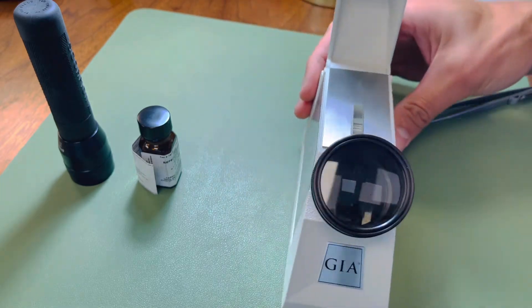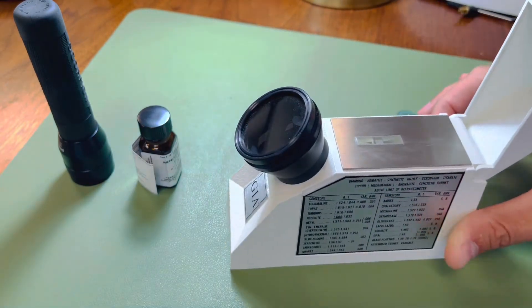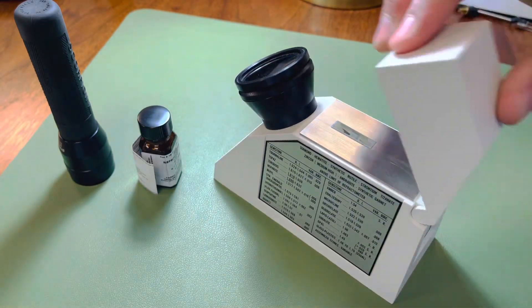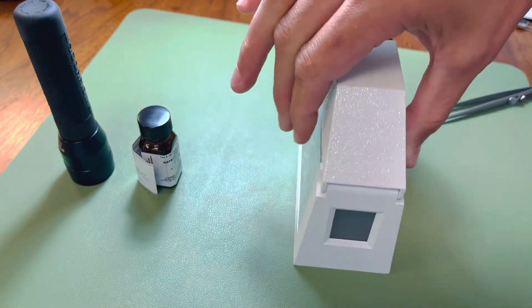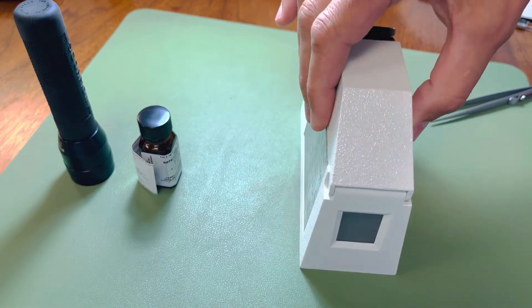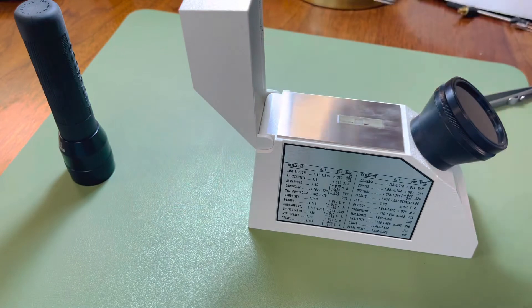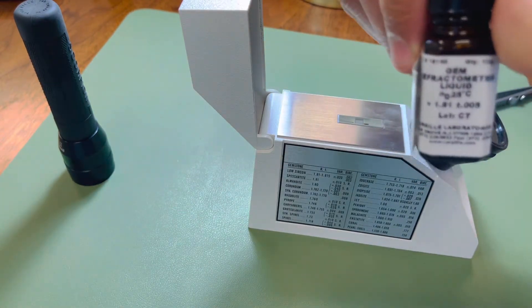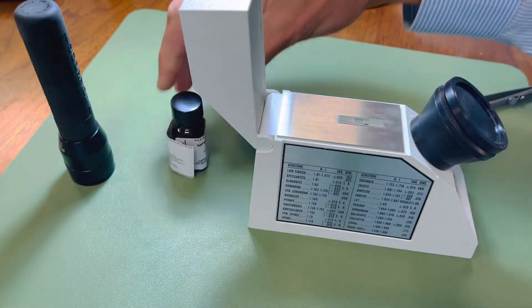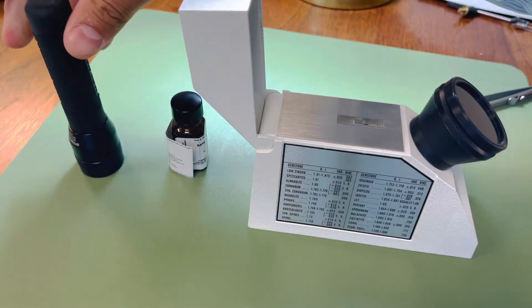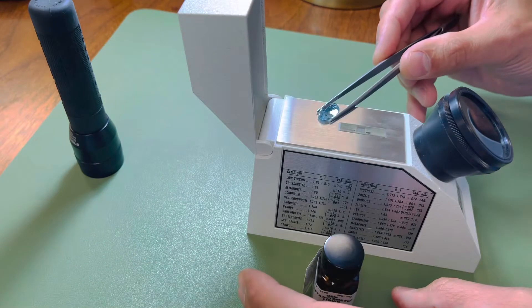So what we got here is the refractometer. The refractometer measures the refractive index of a gemstone by bending light passed through the back. We use this by using a refractive index solution. We send light through the back of the refractometer as it bends.